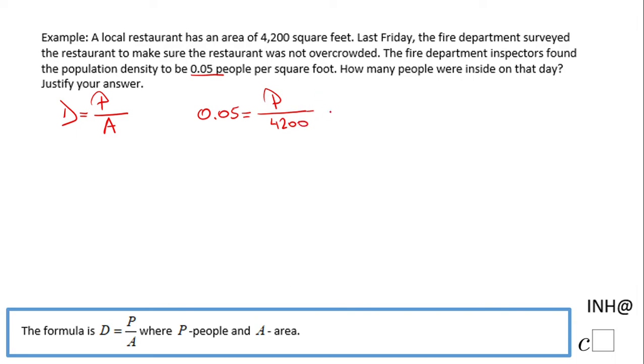In order to find P, the best way is by multiplying both sides by 4,200. We cancel the 4,200 in the denominator, and we have P equals 4,200 times 0.05, and that will be 210 people.